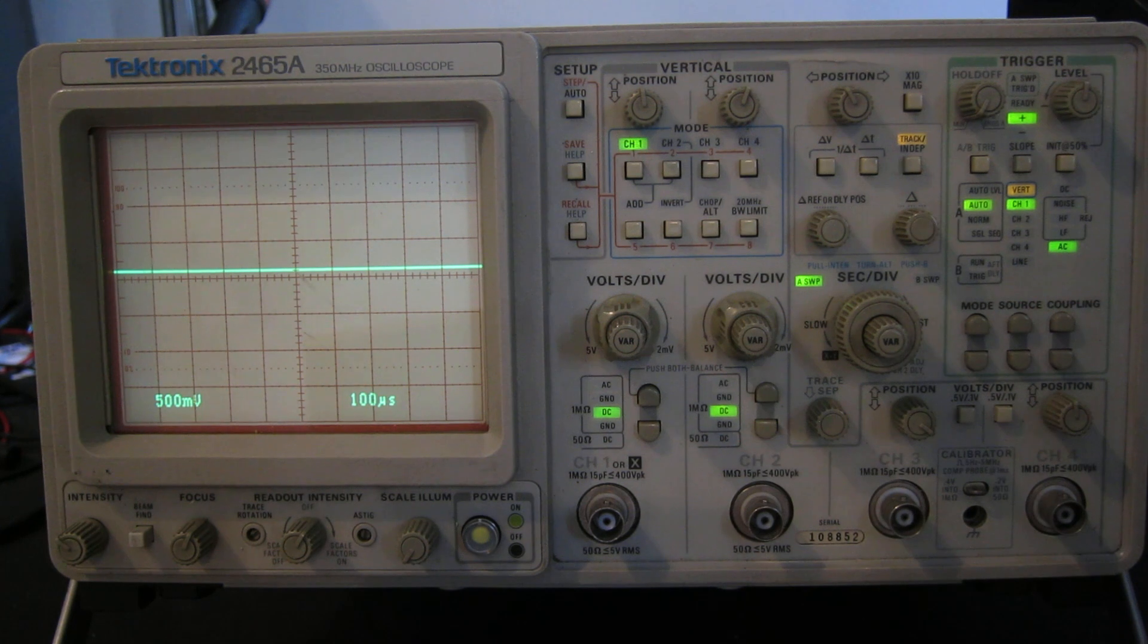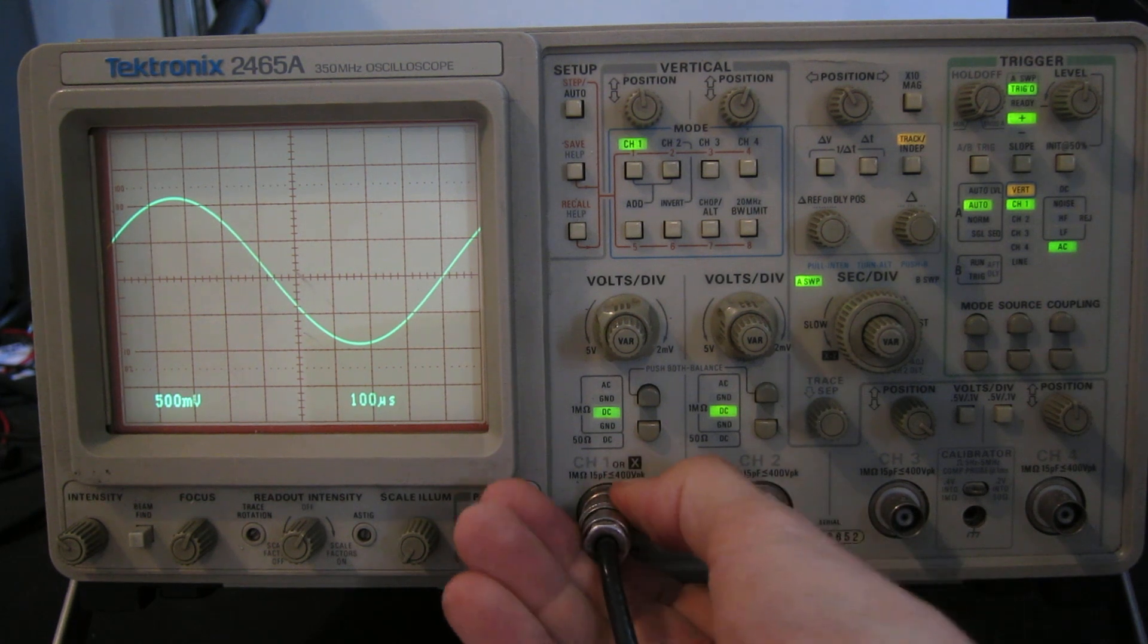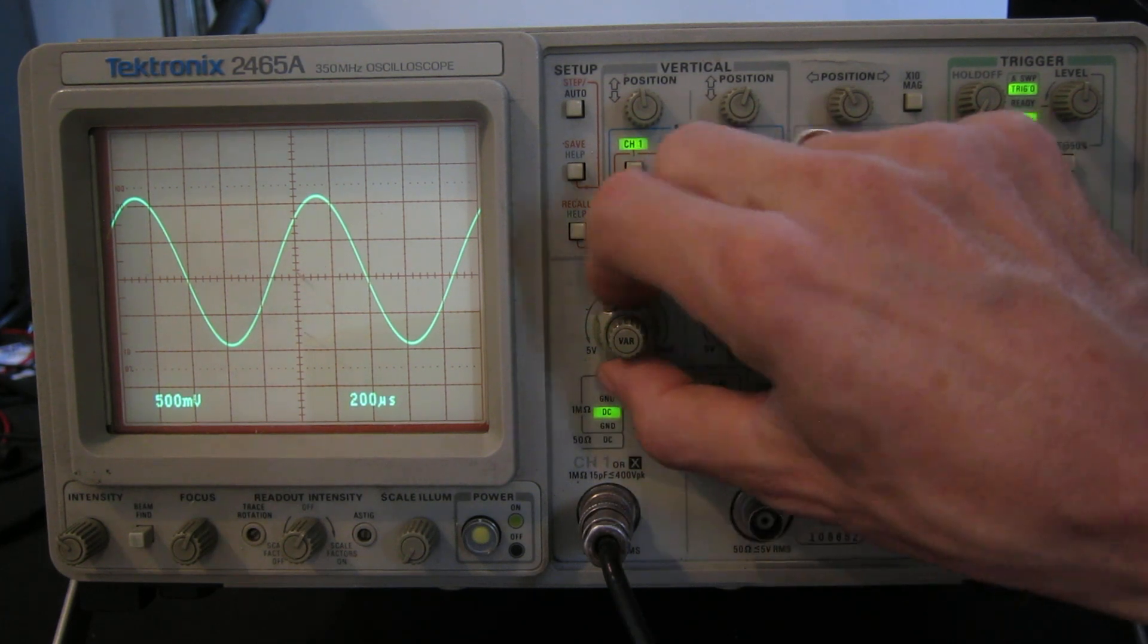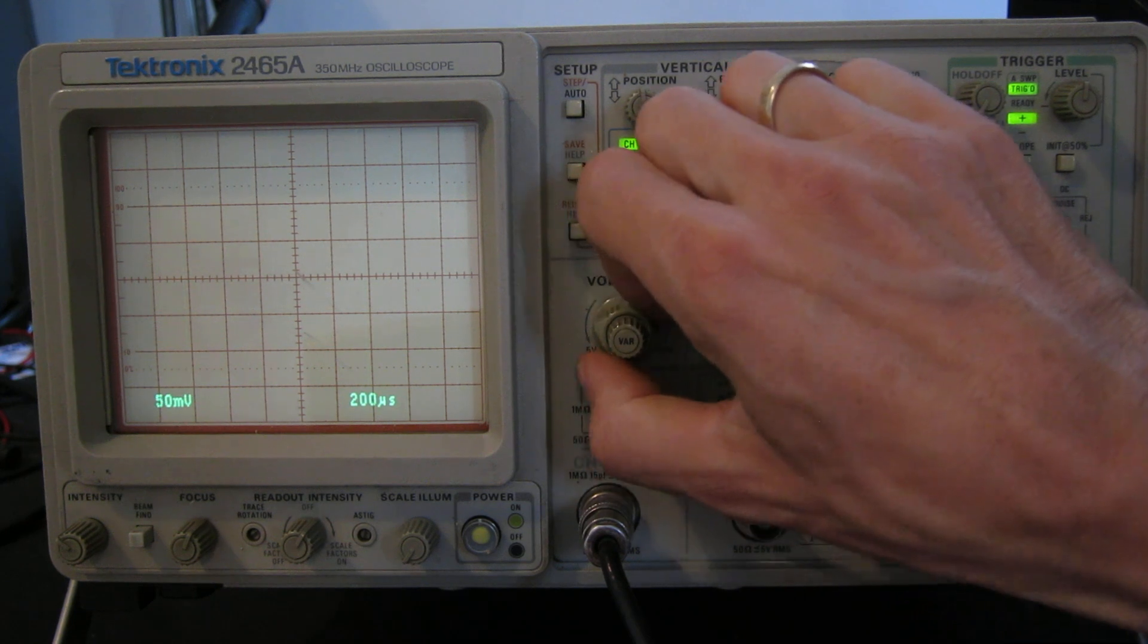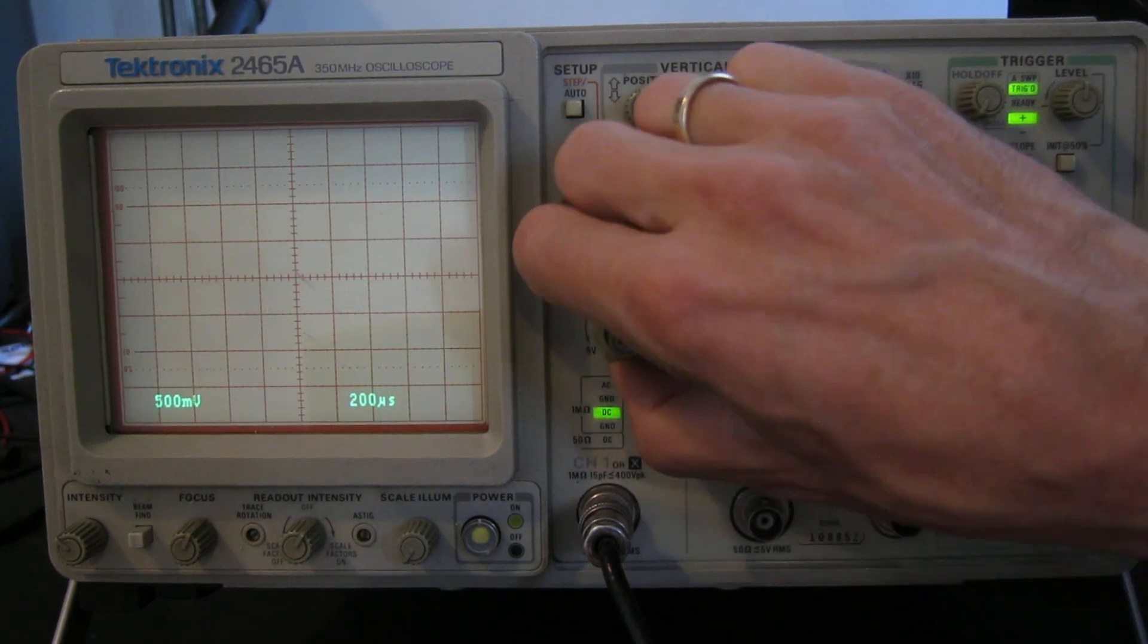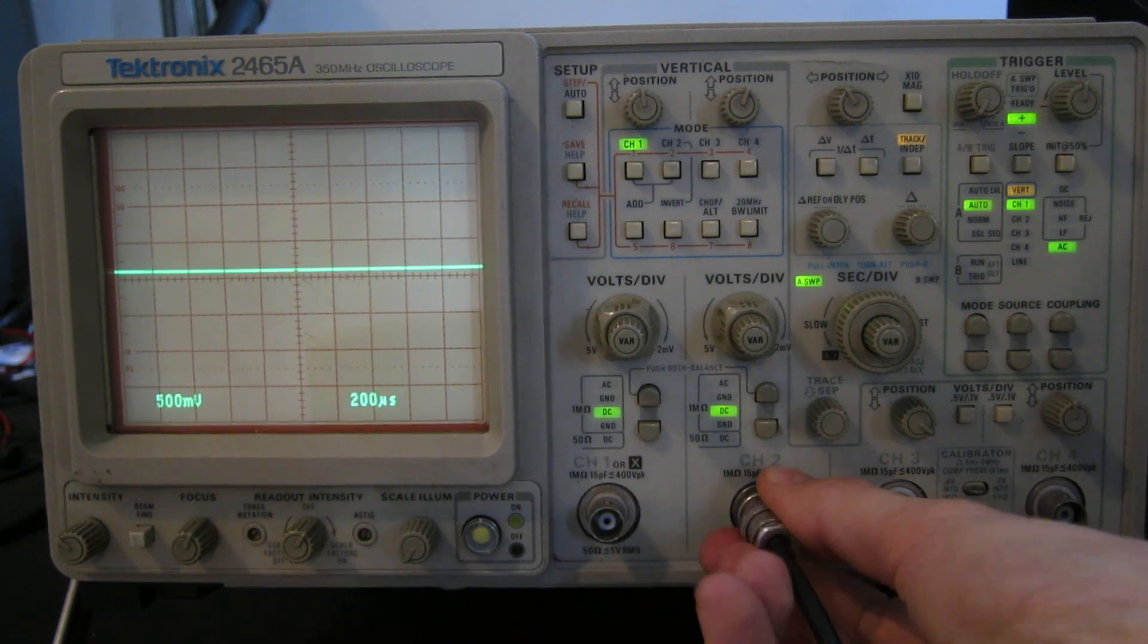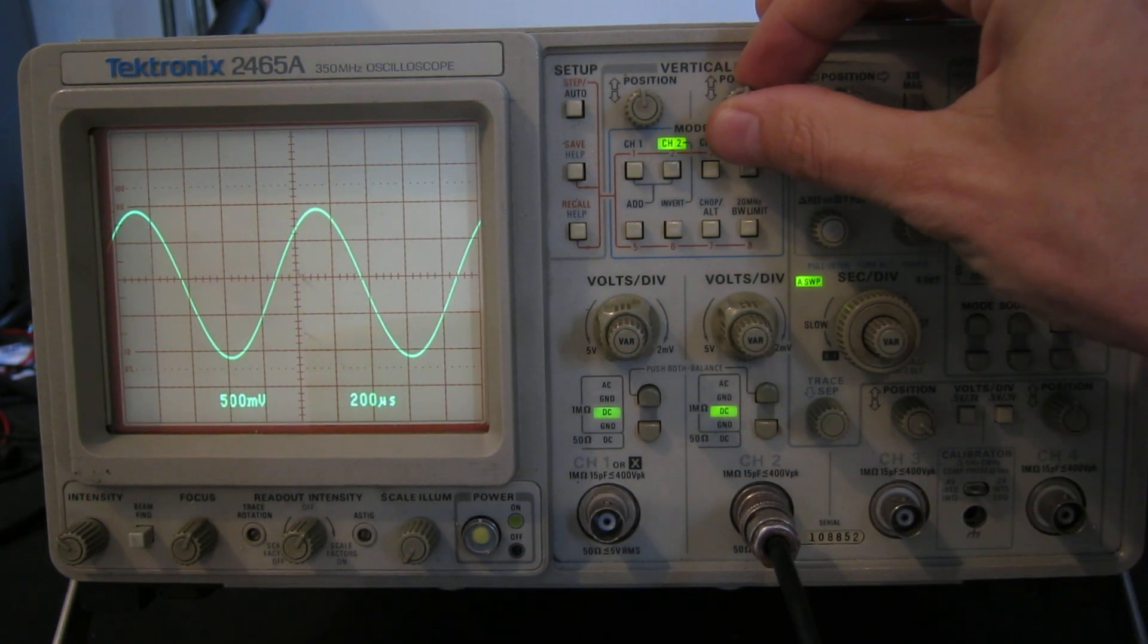I'll just show that each of the four channels works the way it should. I've got a signal generator here with a one kilohertz sine wave on it. Display that nicely. We've got channel 1. Attenuator does what we'd expect. Tracer disappears because it's too big sometimes. And we'll show channel 2.